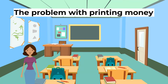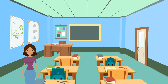What is the problem of just printing more money? Printing more money doesn't increase economic output — it only increases the amount of cash circulating in the economy. If more money is printed, consumers are able to demand more goods, but if firms still have the same amount of goods, they will respond by putting up prices. In a simplified model, printing money will just cause inflation.